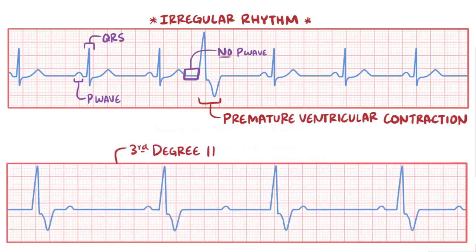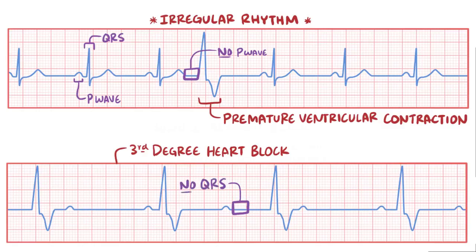On the flip side though, if there's a third degree AV block, then there might be a P wave that's not followed by a QRS complex.